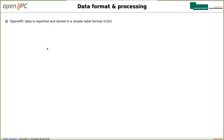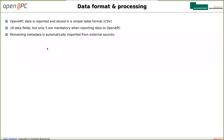Let's get into the details of our data format and data processing. We like to keep it simple at OpenAPC, so our whole data is reported and stored in simple table format — simple CSV files. Our data format consists of 18 metadata fields, but only five of these fields are mandatory when reporting data to OpenAPC, because we like to keep low entry barriers. All the remaining metadata is automatically imported from external sources.